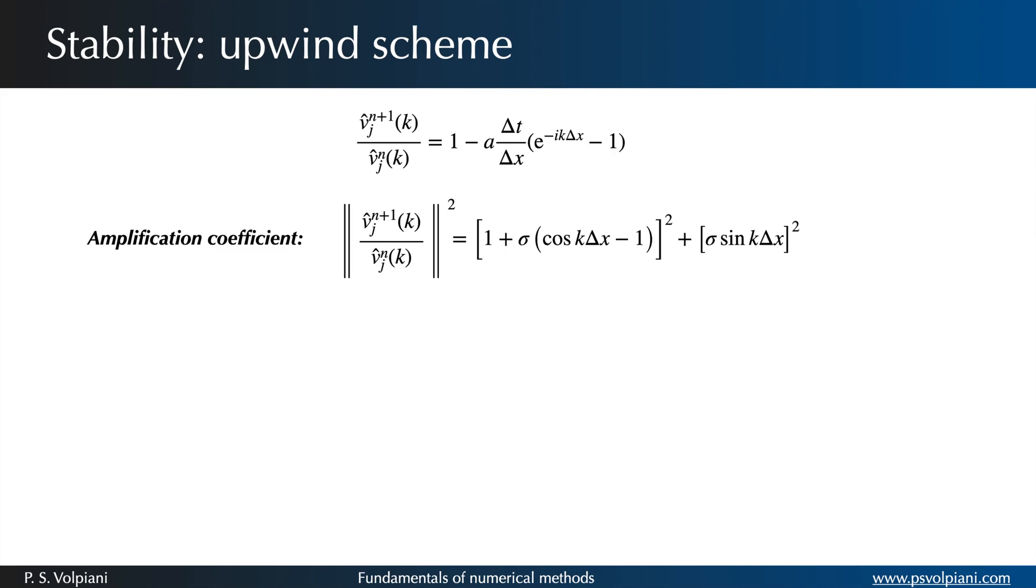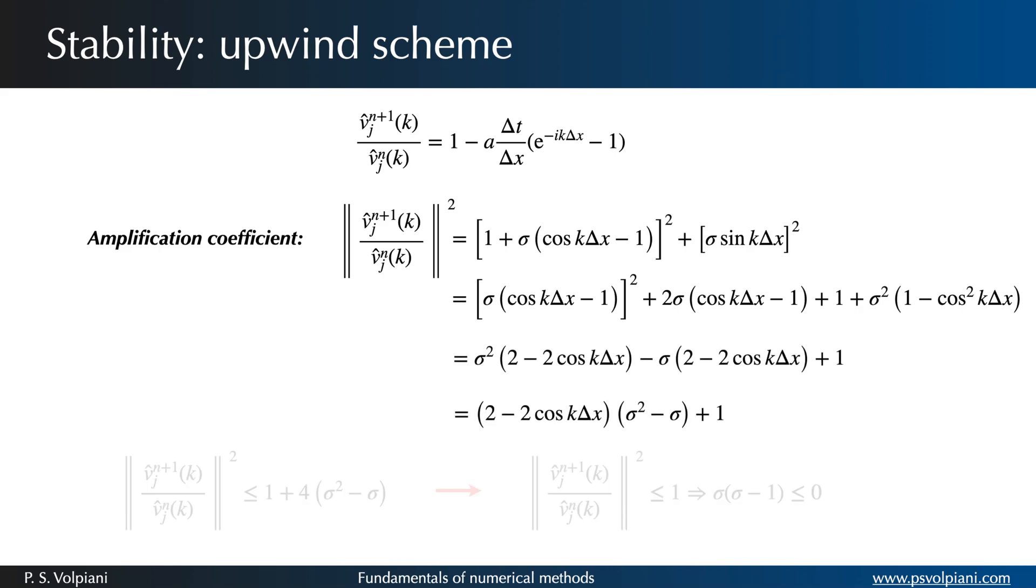Replacing a times delta t over delta x by sigma in this equation we obtain this following expression. And finally given that the cosine function is bounded we have that sigma times sigma minus 1 must be less than or equal to 0.